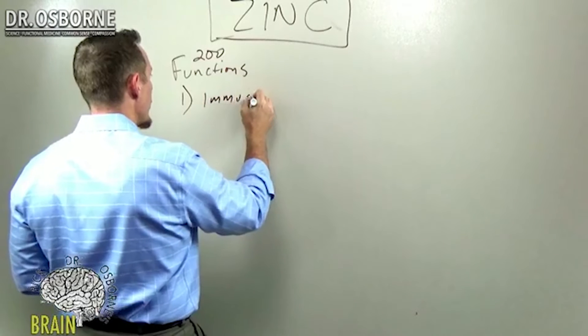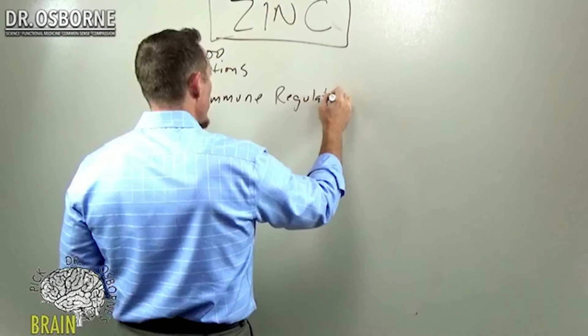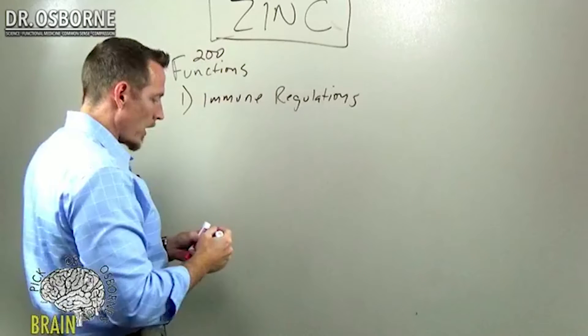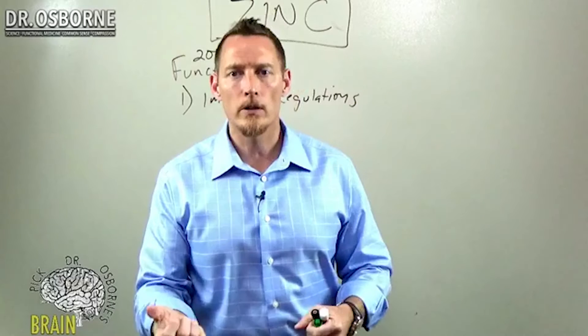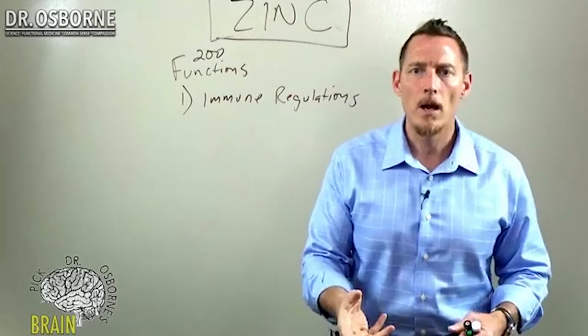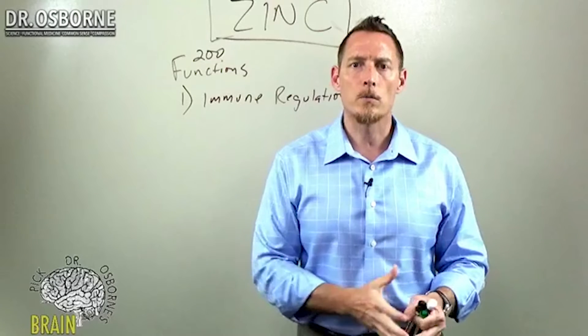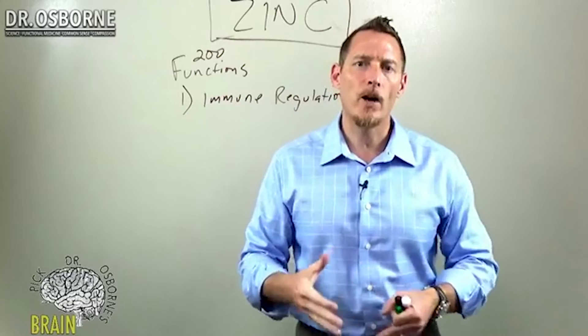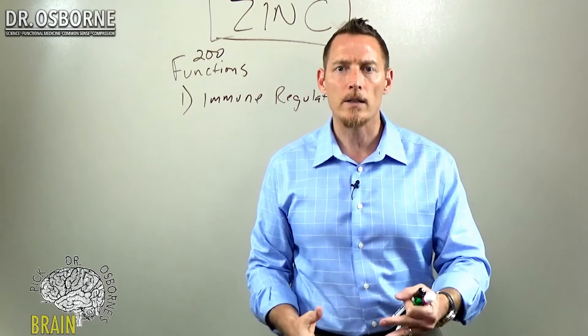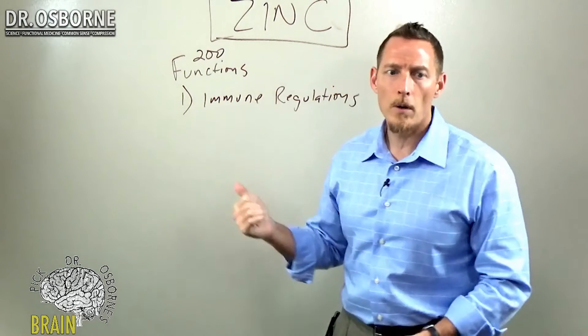This is why you'll hear with a cold or flu you'll see a lot of the immune formulas, the supplemental formulas being sold on the market, a lot of them contain zinc. The reason being zinc is very important for your immune cells to mature. It's very important for them to produce certain chemicals that help you fight off viruses and bacteria and fungus and parasites. So zinc very critical for immune function and immune regulation.